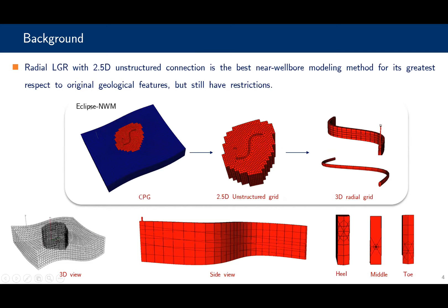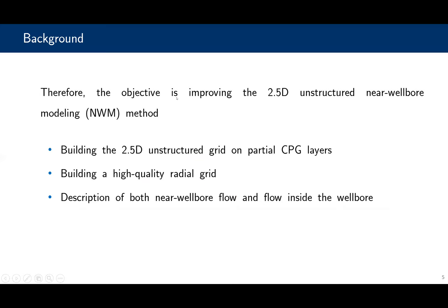This method has been implemented in the Eclipse near-wellbore NWM module, but it still has three restrictions. The first is the 2.5D unstructured grid must cover the whole reservoir thickness, which leads to many unnecessary grid cells in layers far from the wells. The second is that grid quality is not so good when the wells have a large angle of inclination. And the third is the outermost radial grid is too large compared with the radial cells, as seen in the figure. Therefore, the objective is to improve the 2.5D unstructured near-wellbore model method.